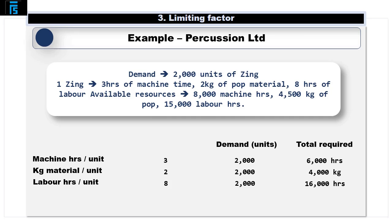Given that there are only 15,000 labour hours available, this means that Percussion can only make 1,875 units — calculated as 15,000 hours divided by 8 hours per unit — rather than the full demand of 2,000 units.